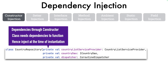What are the advantages of this kind of dependency injection? Well, it guarantees a valid object state by enforcing dependency injection at creation time itself. You don't have to worry about a situation where the object exists but its dependencies are not yet set, which could cause things to go wrong. All the dependencies are passed at the time of constructor invocation itself.